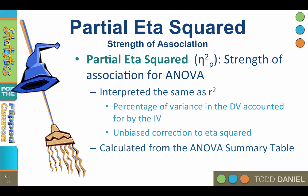When working by hand, partial eta squared can be calculated with the information in the ANOVA summary table. It is especially useful for repeated measures ANOVA and multiple factor designs, and it can be requested using the GLM univariate model in SPSS. More about that in a moment.